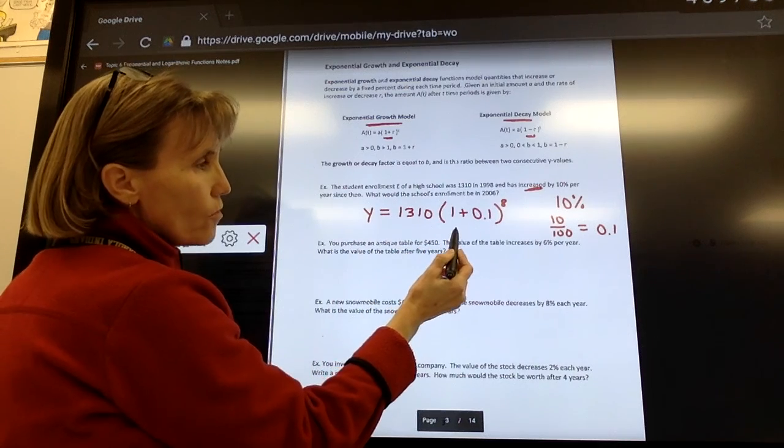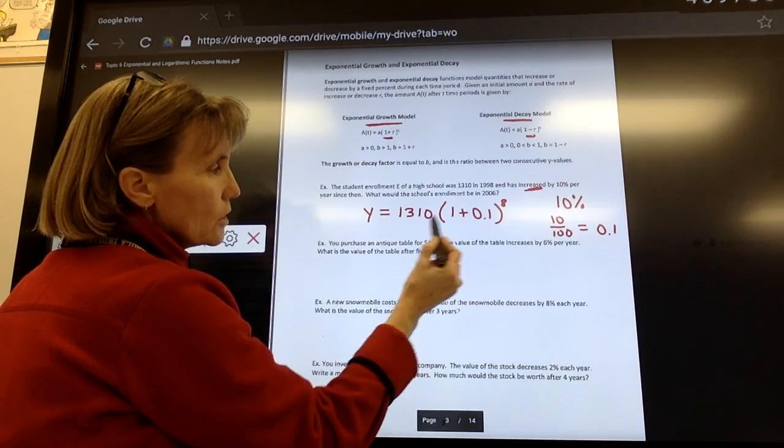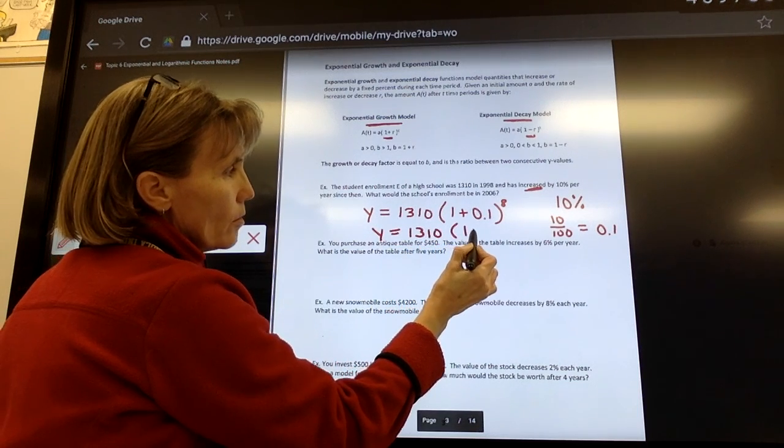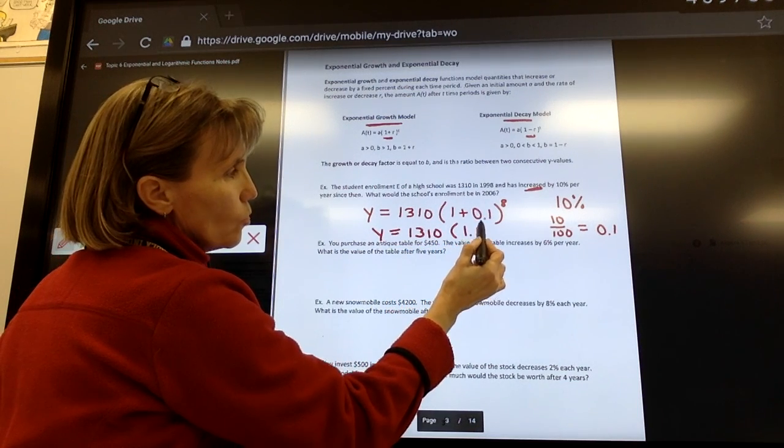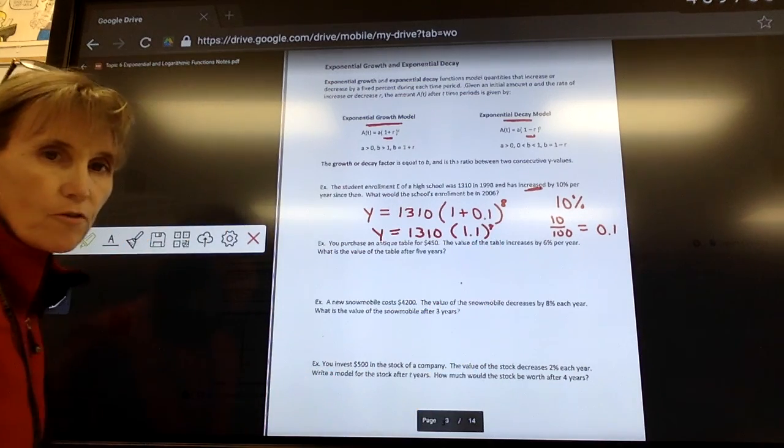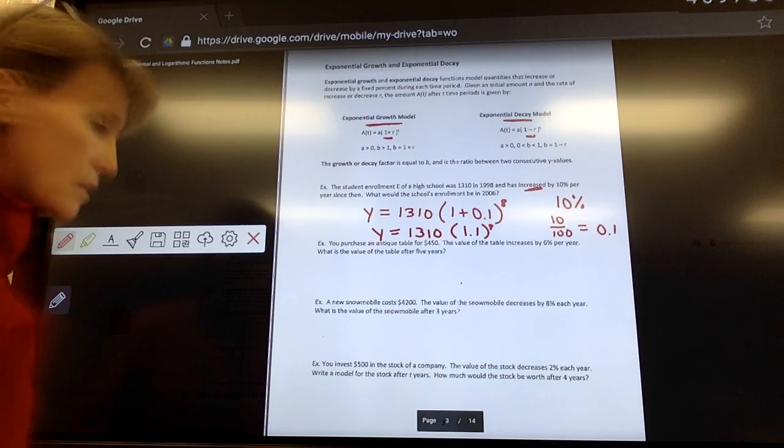I want to follow order of operation for this, so I want to do what's inside parentheses first. So 1 plus 0.1 is just 1.1 raised to the power of 8. 1.1 is what we would say the growth factor is. That's that value.